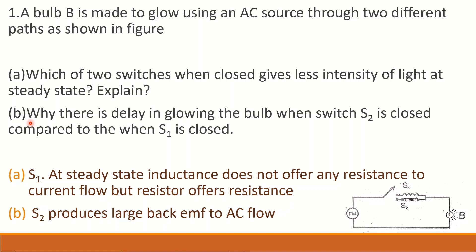Why is there a delay in glowing the bulb when switch S2 is closed compared to when S1 is closed? S1 has a resistor, which offers resistance to the current flow, giving the same light intensity.